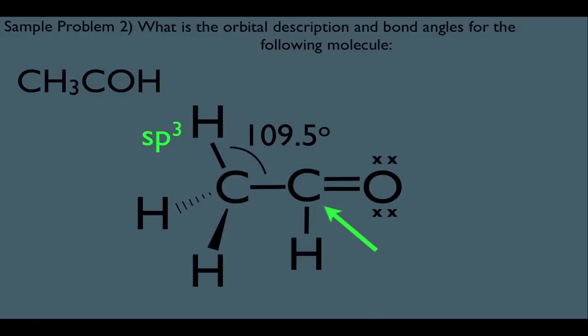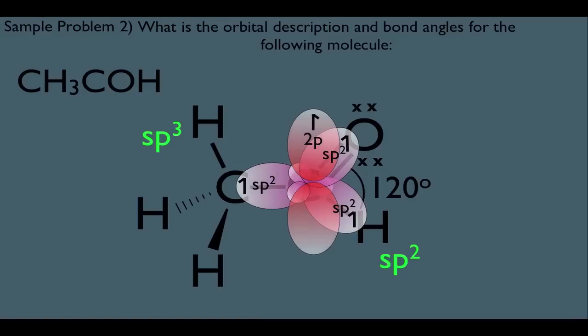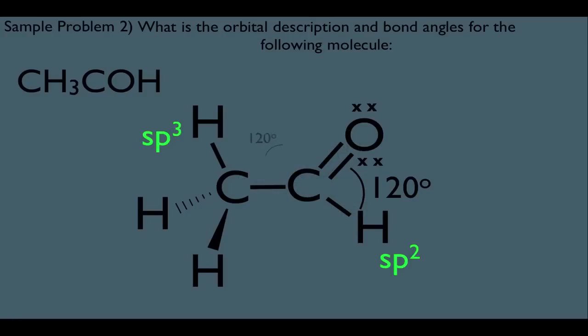Now let's look at the carbon on the right and understand its hybridization. Using the quick and dirty method, we get a total steric value of three, which means that carbon is SP2 hybridized. Remember, all SP2 hybridized atoms have 120 degree bond angles. So a more real-life description of this bonding shows his particular orbital arrangement — the three SP2 hybridized orbitals and the unhybridized p orbital. So that explains the carbon on the right, and that bond angle is also 120 degrees.